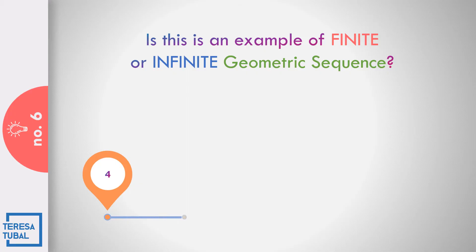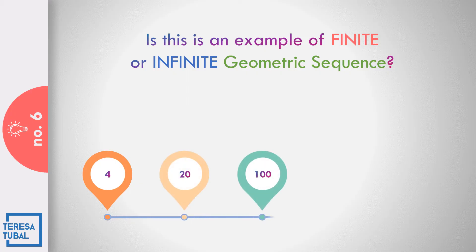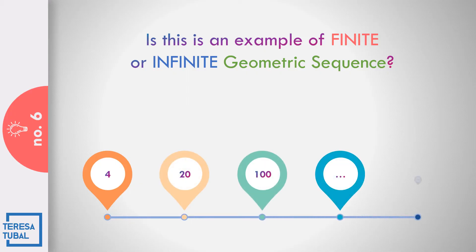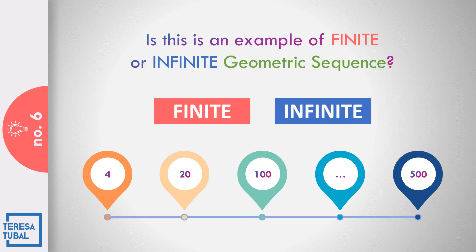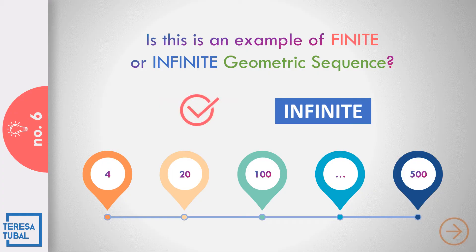How about number 6? In the geometric sequence 4, 20, 100, and three dots, 500 — finite or infinite? The answer is finite, because we have both the first term and the last term.